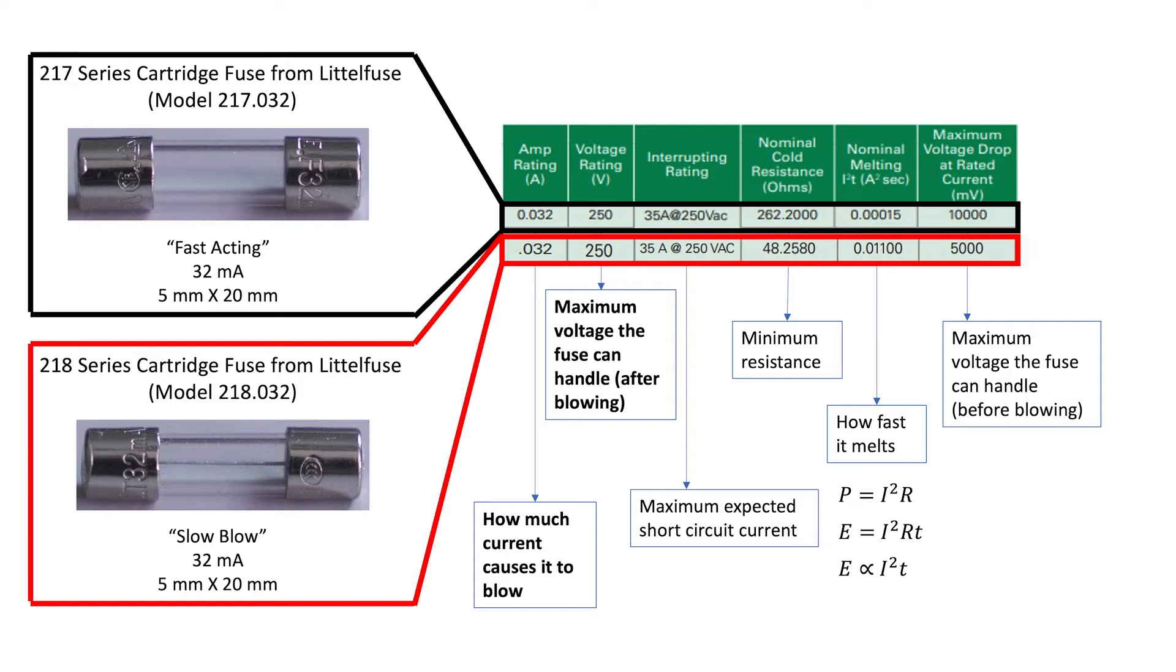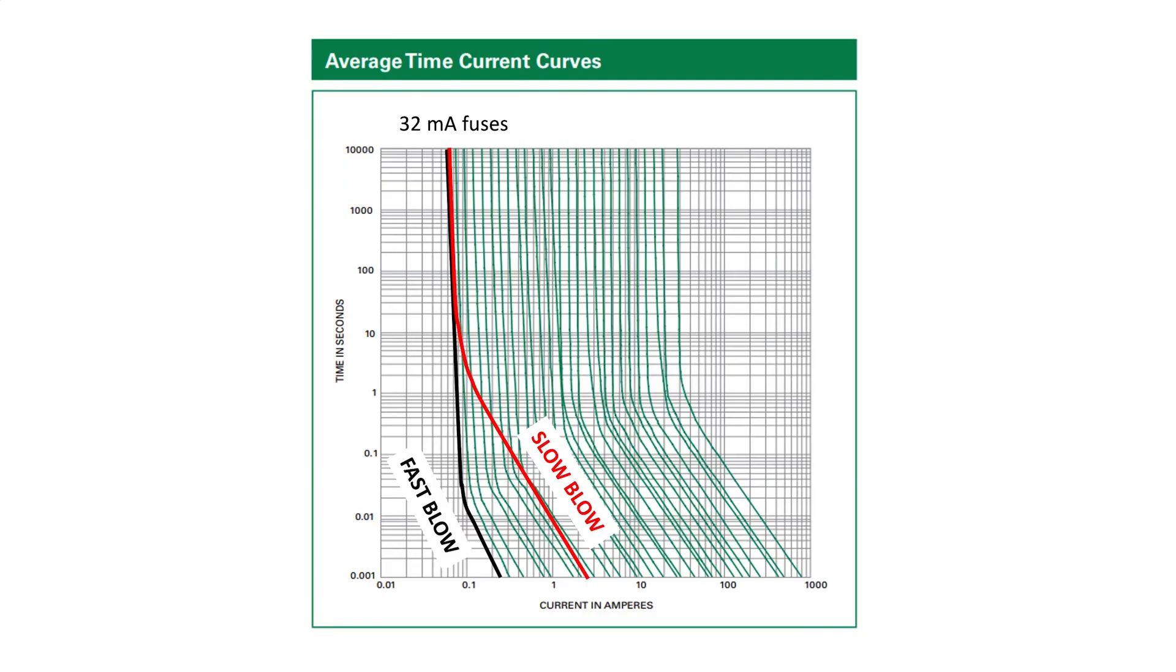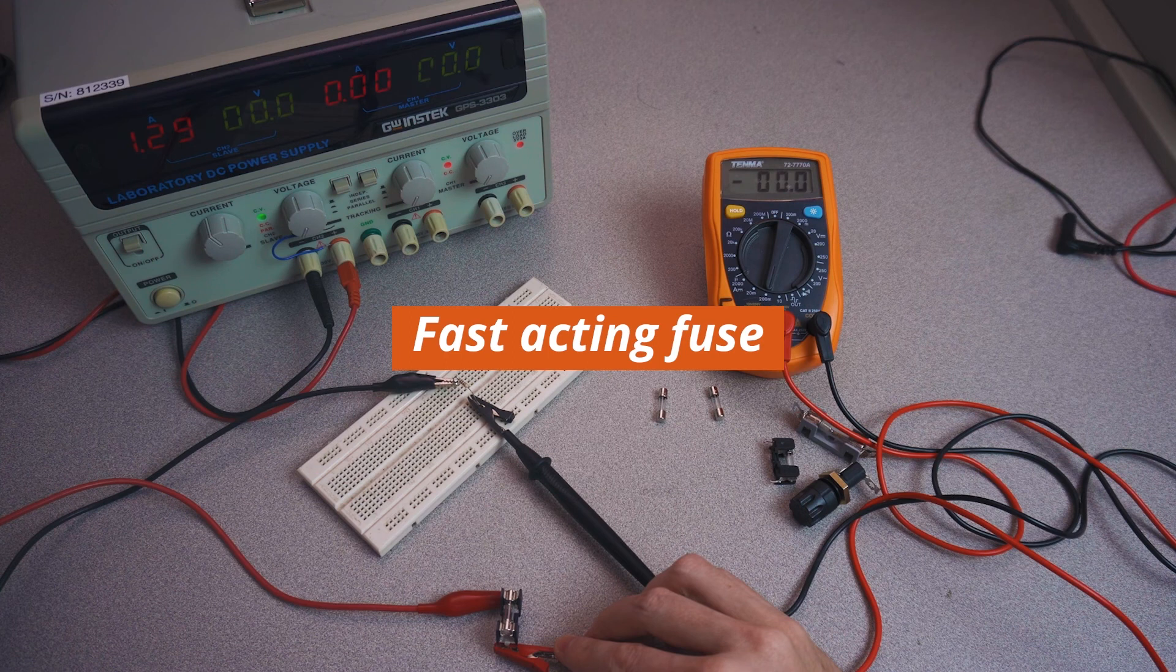We can compare these two curves. I've superimposed the curve from the slow blow fuse onto the same graph that the company used to describe their fast blowing fuse. Let's say hypothetically that I were to pass 80 milliamps through each of these fuses. You can see that the fast blowing fuse would take about 0.1 seconds to melt, whereas the slow blow fuse would take about 10 seconds to melt.